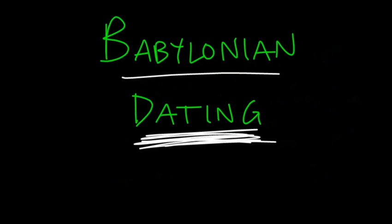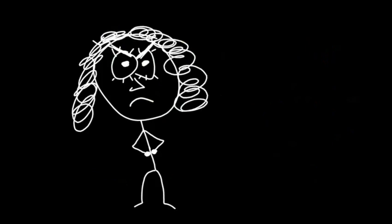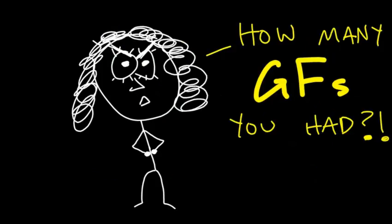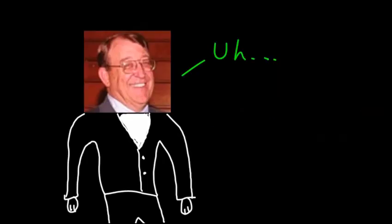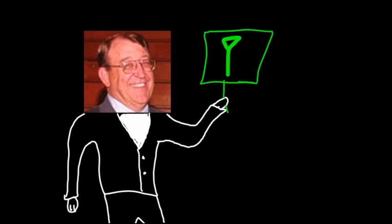I mean, come on. Can you imagine Babylonian dating? The lady would be like, how many girlfriends have you had? And the guy would be like, I don't know. There's many? Did he mean 1 or 60? I mean, come on.